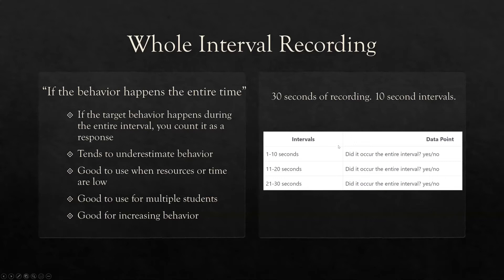Using the same example — 30 seconds of recording broken into 10-second intervals — interval 1 (1 to 10), interval 2 (11 to 20), interval 3 (21 to 30). The data point asks: did it occur the entire interval? Yes or no for each. You're going to get a very simplistic view of behavior. A lot is happening within 30 seconds, but the data sheet will only show three data points, giving us an idea rather than the full picture.